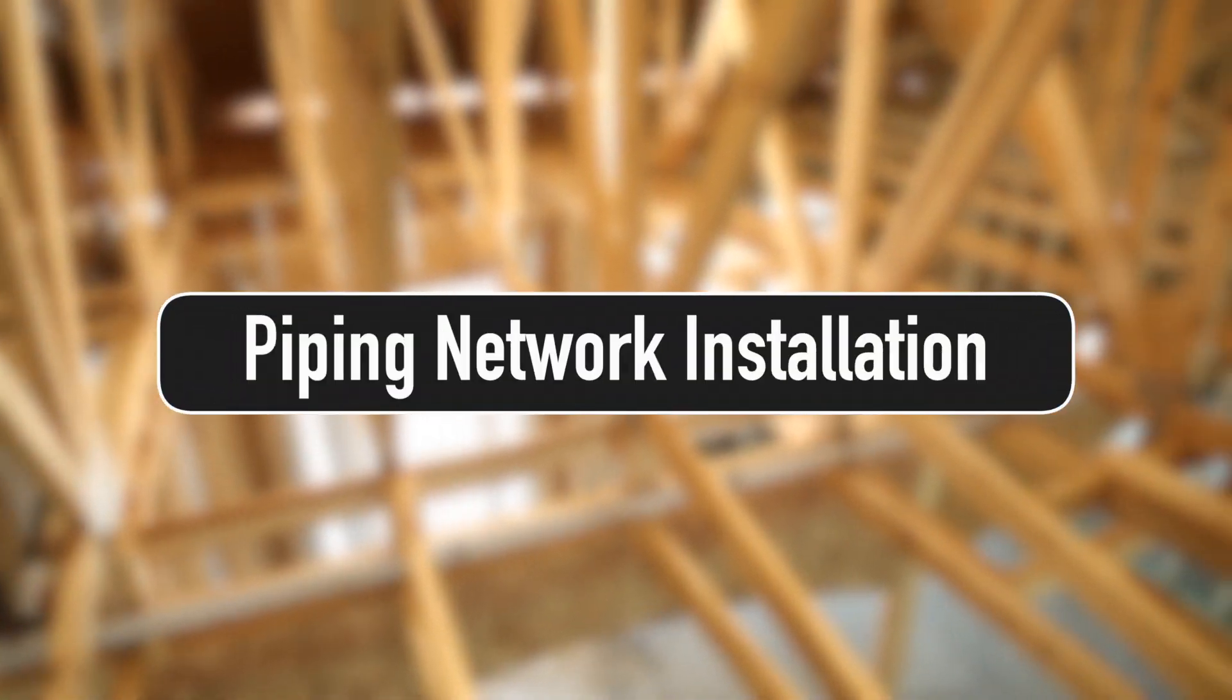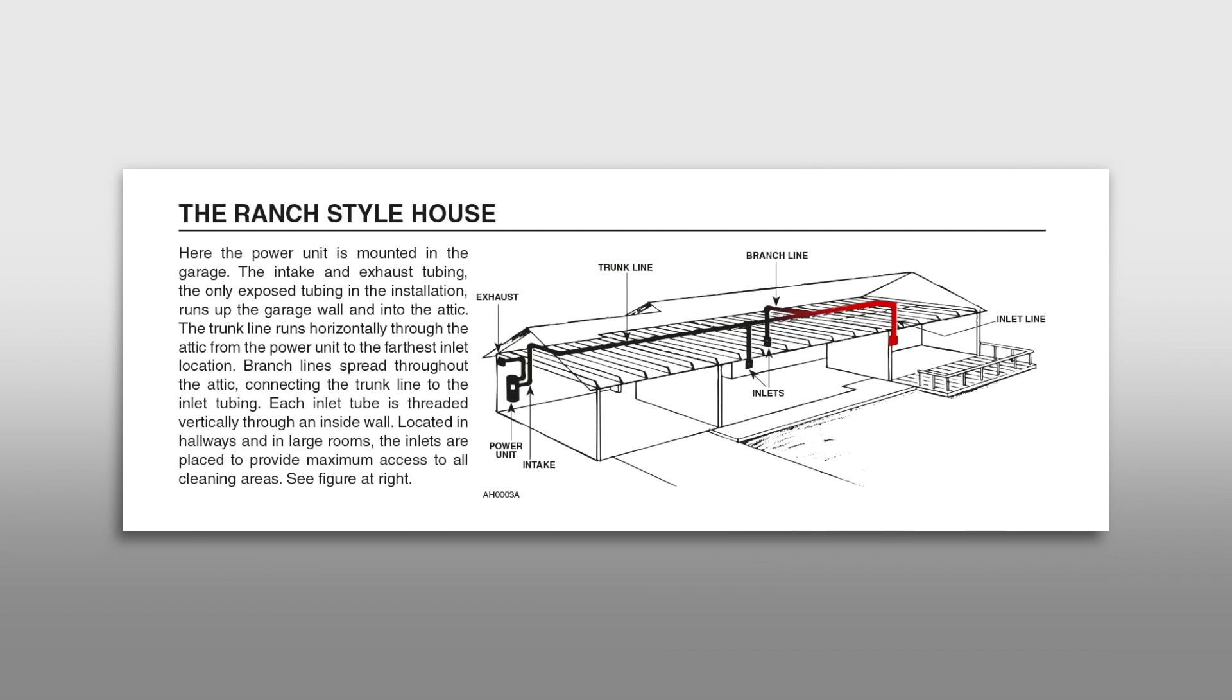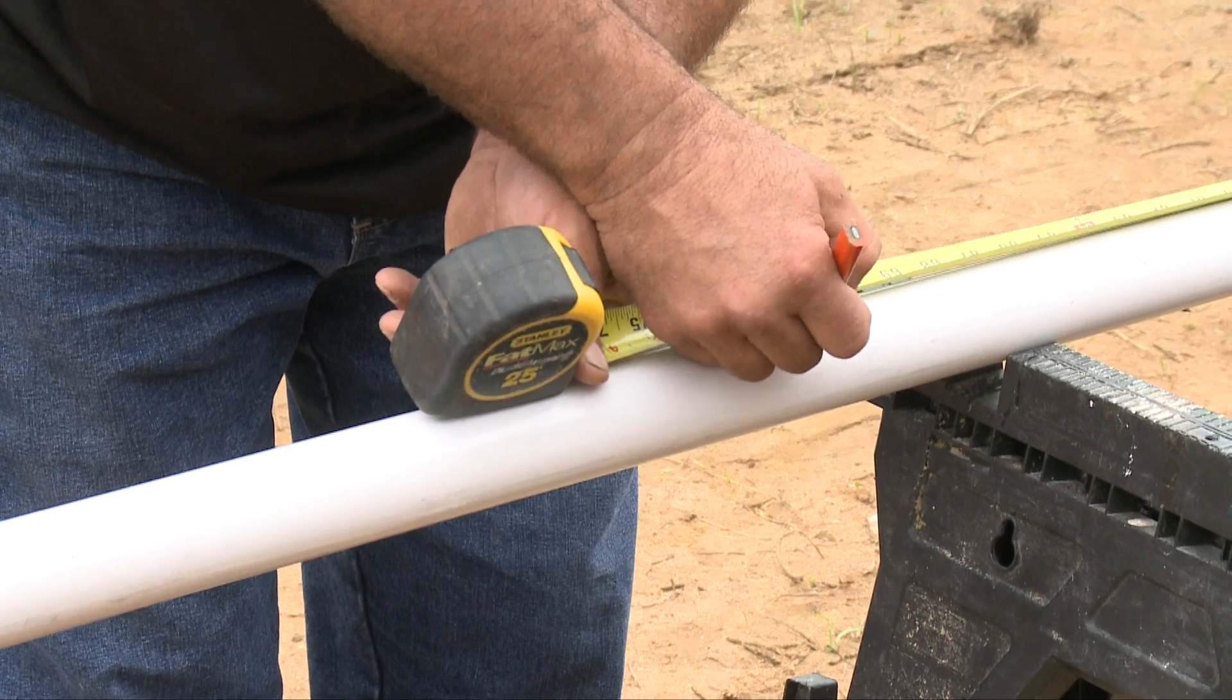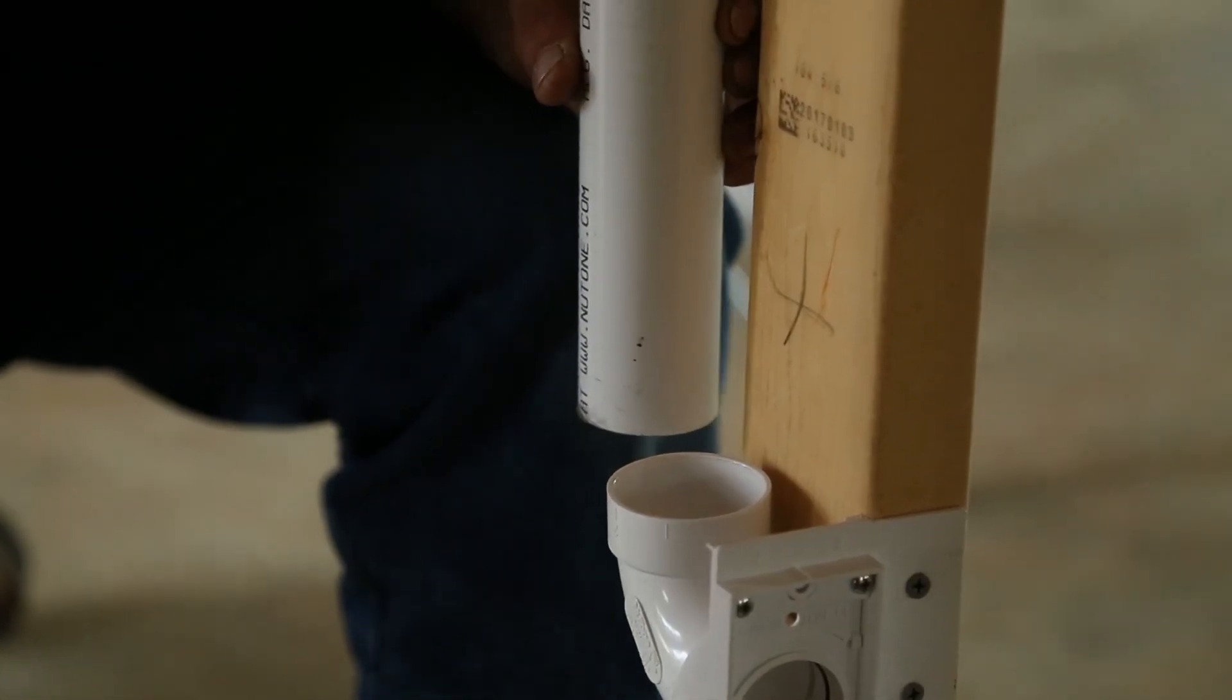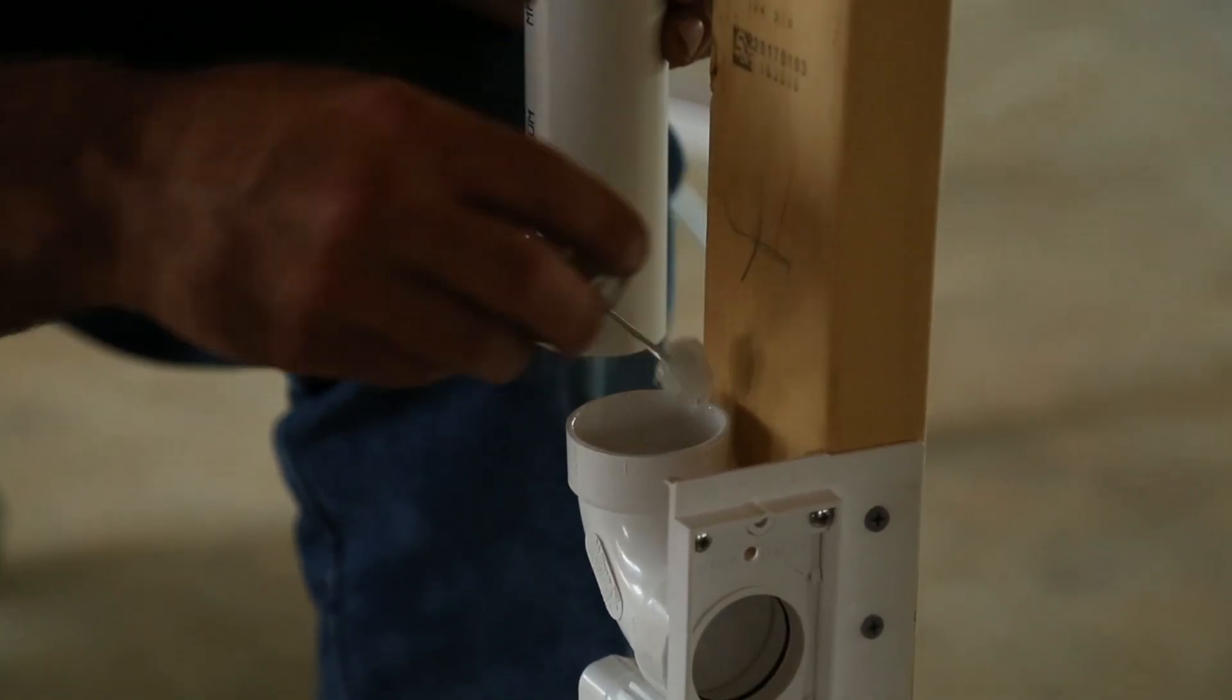Once you have mounted all desired inlet brackets, you can install the network of piping that connects your inlets to the power unit. Start the piping network at the inlet bracket farthest from the power unit. Create your first branch line by measuring, cutting, and aligning a length of pipe that runs from the elbow you've glued to the inlet bracket to where the trunk line is planned to go.